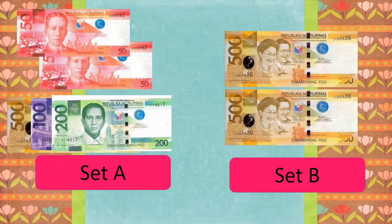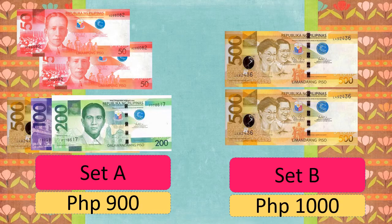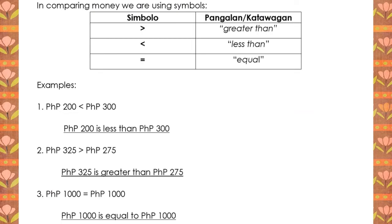Let's try another one. On Set A, we have 700 pesos. On Set B, we have 600 pesos. Which set is greater? Set A. Let's try another one. On Set A, we have 900 pesos. On Set B, we have 1,000 pesos. Which set is greater? It's Set B. In comparing amount of money, we use the following symbols: greater than, less than, and equal to. For example, if we compare 200 pesos to 300 pesos, 200 pesos is less than 300 pesos. If we compare 325 pesos and 275 pesos, 325 pesos is greater than 275 pesos. If we compare 1,000 to 1,000, 1,000 is equal to 1,000.